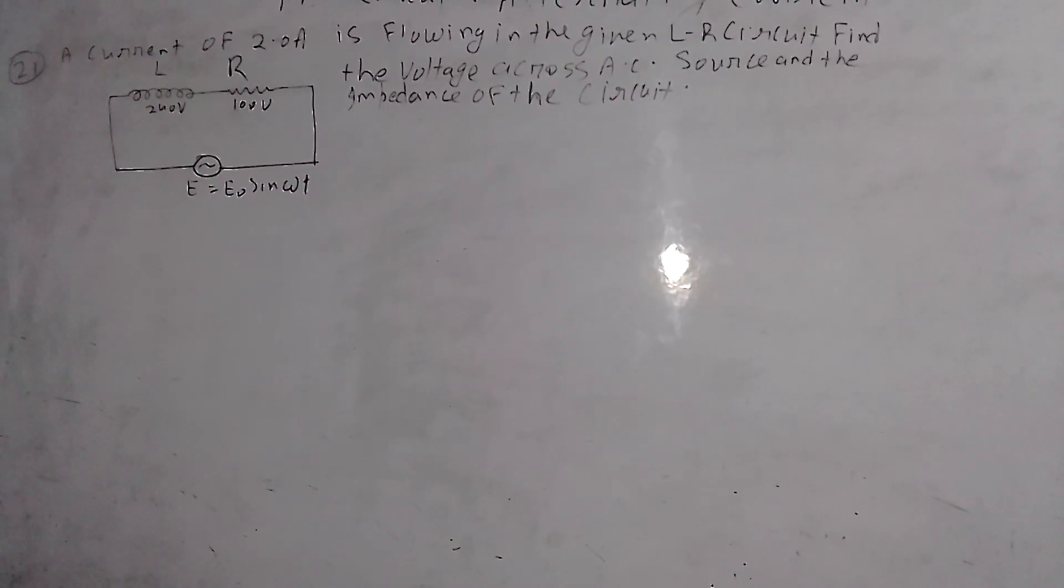When a current of 2 ampere is flowing in the given LR circuit, find the voltage across the AC source and the impedance of the circuit.